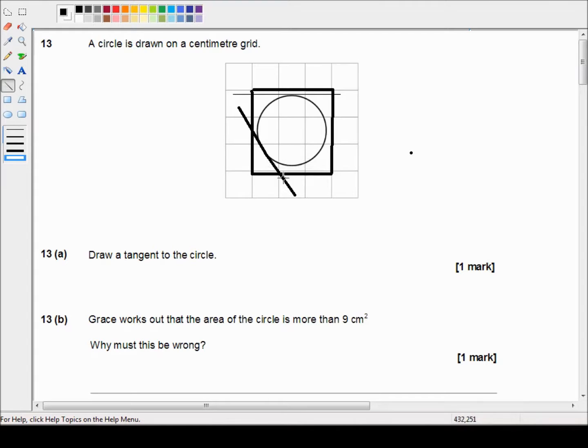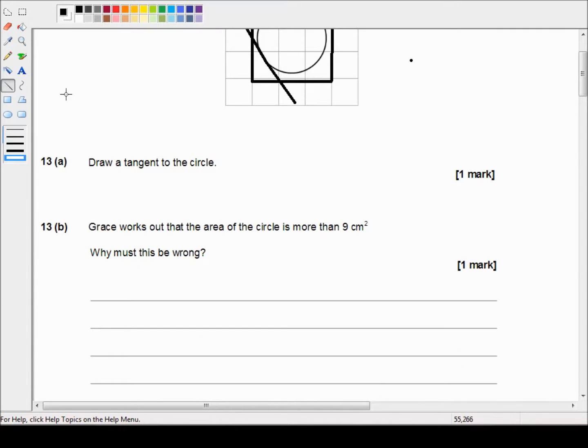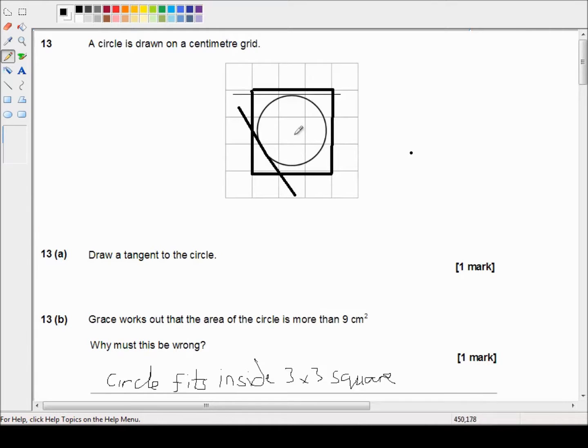Okay, so the answer to part B is just that the circle fits inside a nine-centimeter square. So I'll write: circle fits inside 3×3 square. And that's all you need to say for one mark. You don't need to bother trying to calculate the actual area of the circle.